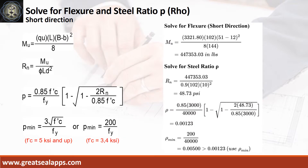At short direction, given ultimate soil pressure equals 3,321.8 PSF, footing width equals 51 inches, footing length equals 102 inches, and column side equals 12 inches, the maximum moment is 447,353.03 inch-pounds. Given resistance factor equals 0.9, L equals 102 inches, and D equals 10 inches, the beam design ratio RN equals 48.73 PSI, and reinforcement ratio rho equals 0.00123. Use rho minimum of 0.005.